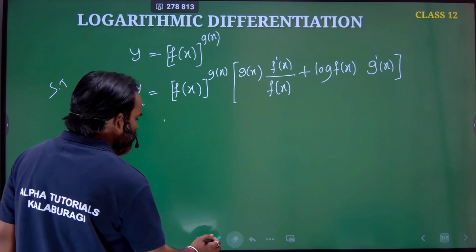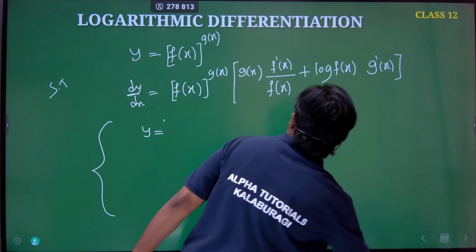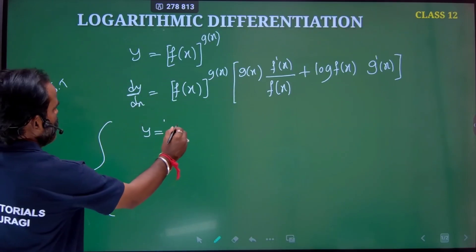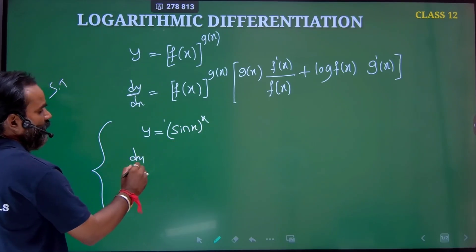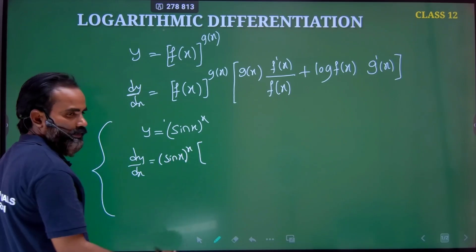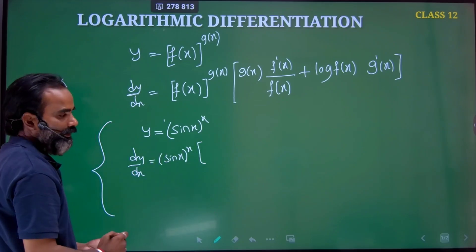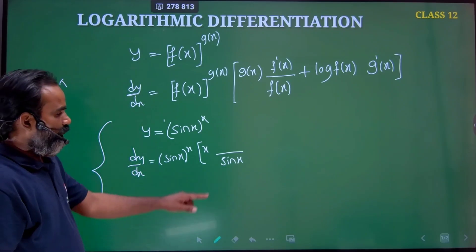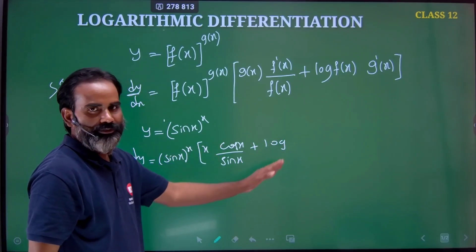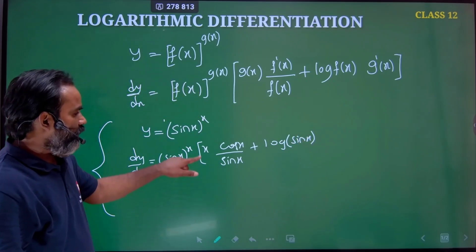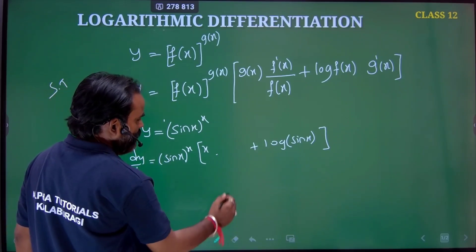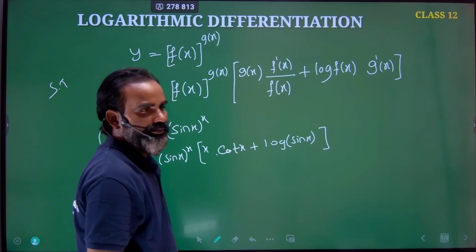So what is the question? y equals sin x to the power of x. Using the short cut: write dy by dx equals sin x to the power of x, then x over sin x times cos x — which gives cot x — plus log sin x times 1 (differentiation of x). Compare — you will get the same answer. Correct.